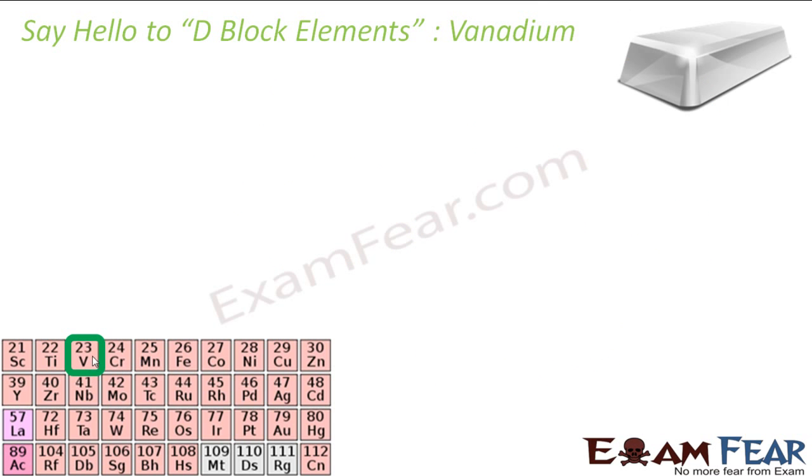The next is Vanadium, short name is V, atomic number 23. It is again hard, ductile, malleable. It is also corrosion resistant. Why is corrosion resistant? The Titanium was corrosion resistant because it was not reacting at all. Vanadium is corrosion resistant because it forms oxide film. Forms oxide layer and this oxide layer protects further oxidation. And since it forms oxide layer, that means it will not be found in pure state.